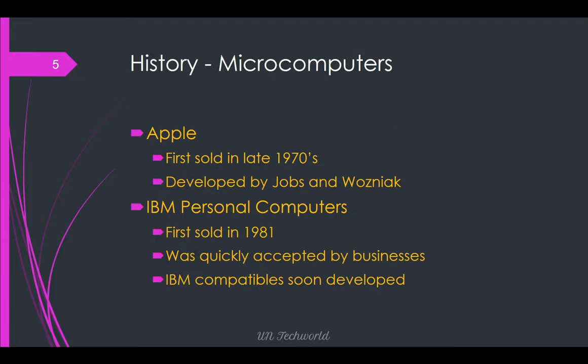History of microcomputers: Apple was first sold in the late 1970s, developed by Jobs and Wozniak. IBM Personal Computers were first sold in 1981. They were quickly accepted by business, and IBM compatibility was soon developed.